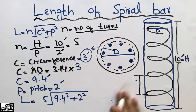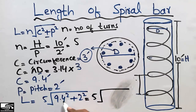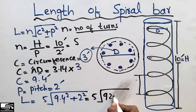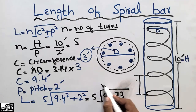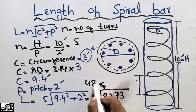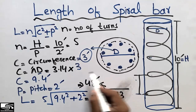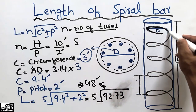Solving this equation on a calculator: L equals 5 times the square root of 9.4 squared plus 2 squared. Taking the square root and multiplying by 5, I get the answer: L is approximately 48 feet. So the length of this whole spiral is 48 feet.